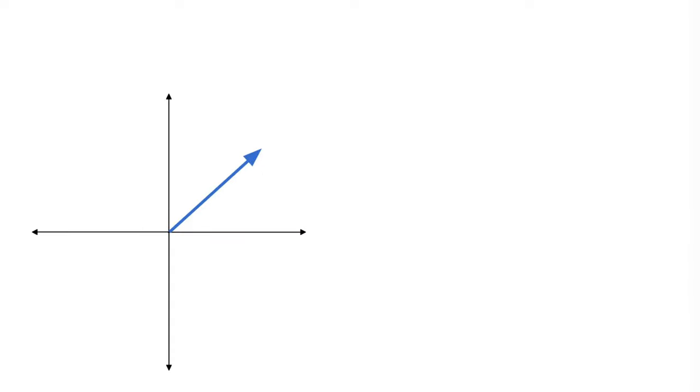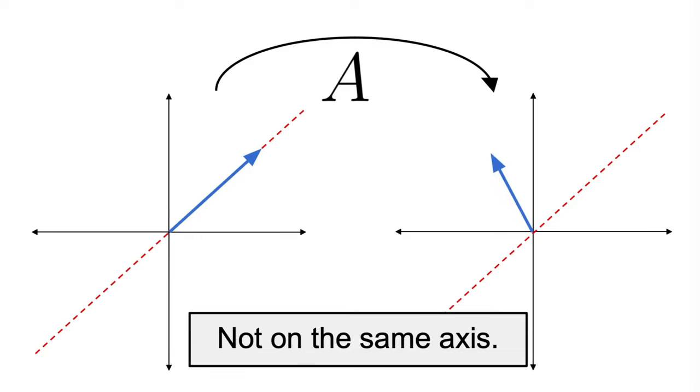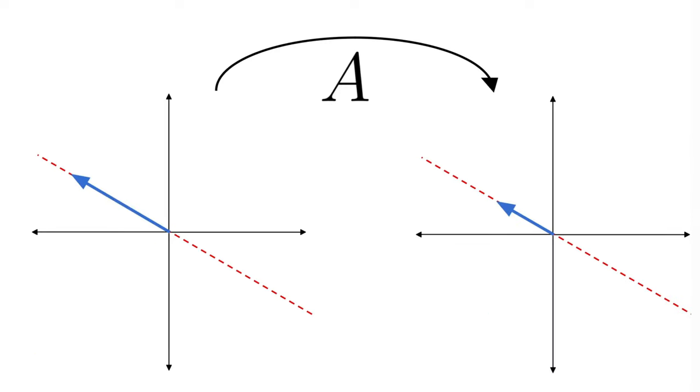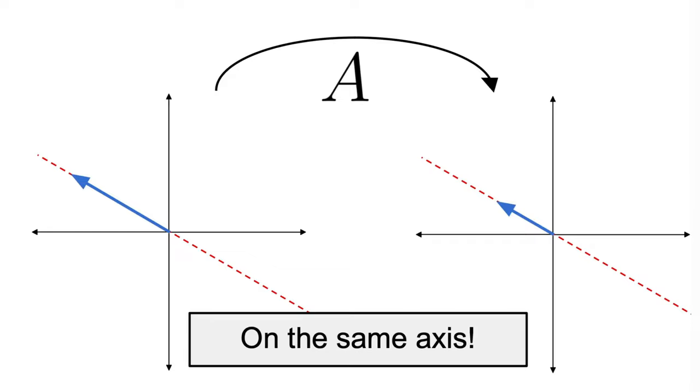In short, when you have a square matrix, you can use it to transform each vector in the space and map it somewhere else within the same space. And usually, most of the vectors don't land on the same axis when this happens. However, there is a special class of vectors that do indeed land on the same axis, and most likely you have guessed by now, those are the eigenvectors of this matrix.